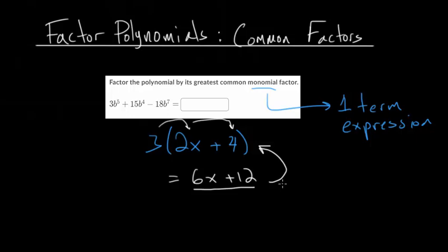Right now we just want to get an understanding of how to do this. When you're factoring, starting from 6x + 12, you're looking for what is the biggest number that would divide into both of these. Because it's the reverse of distribution — and distribution is multiplication — factoring means we think in terms of division. We know that 3 would divide into both 6 and 12. There aren't any x's in both terms, so we can't factor out a variable, but we can factor out a number.